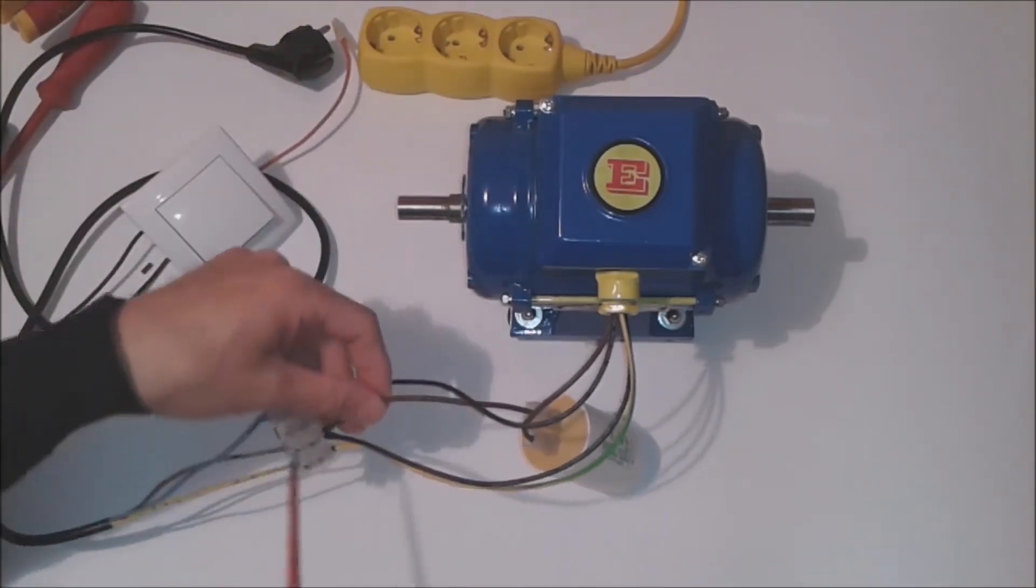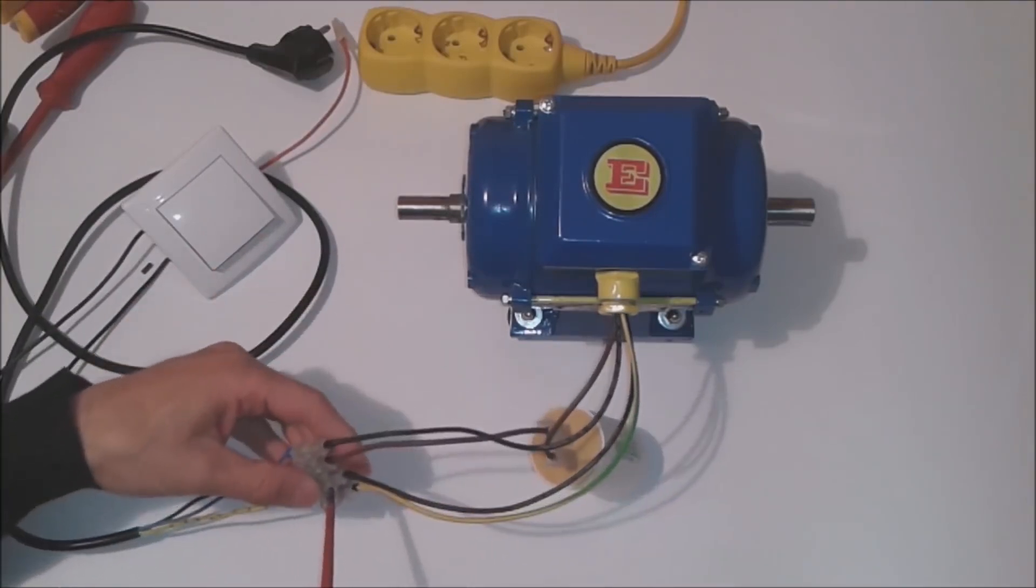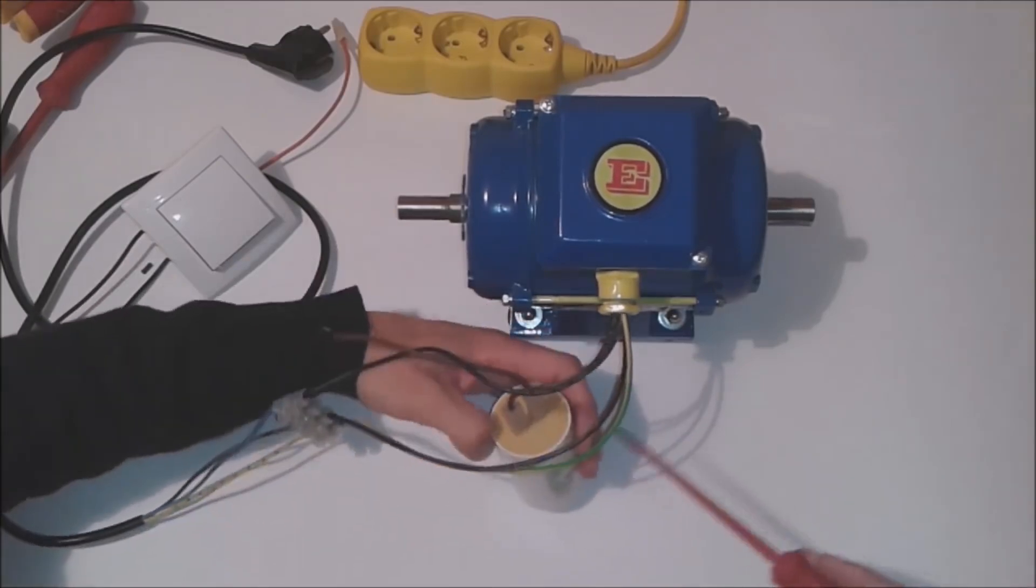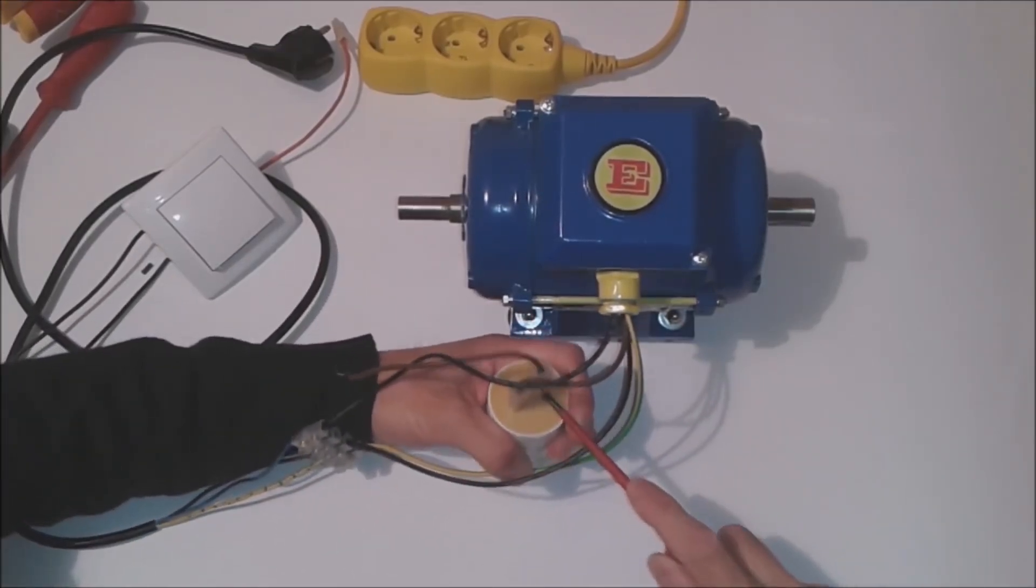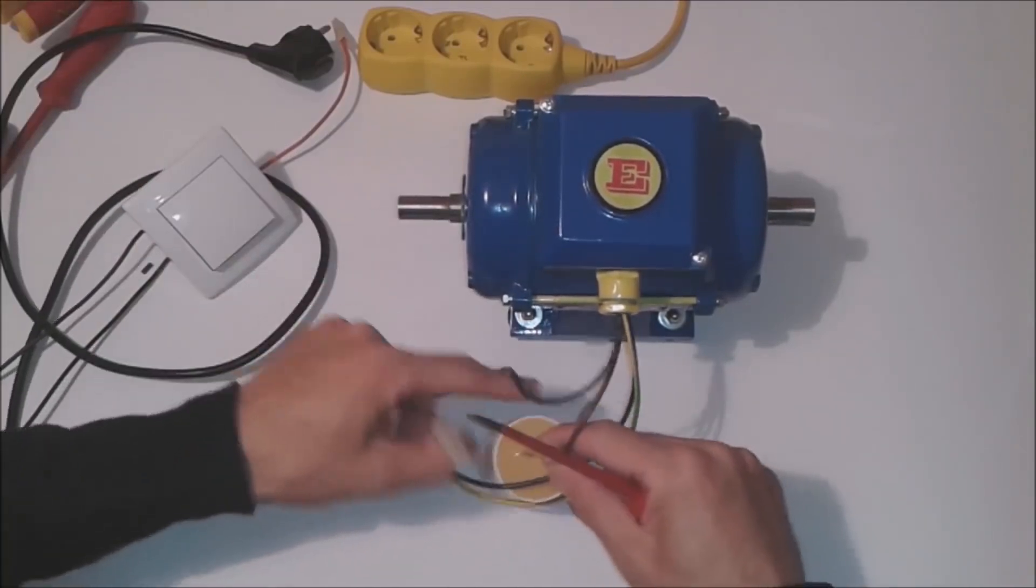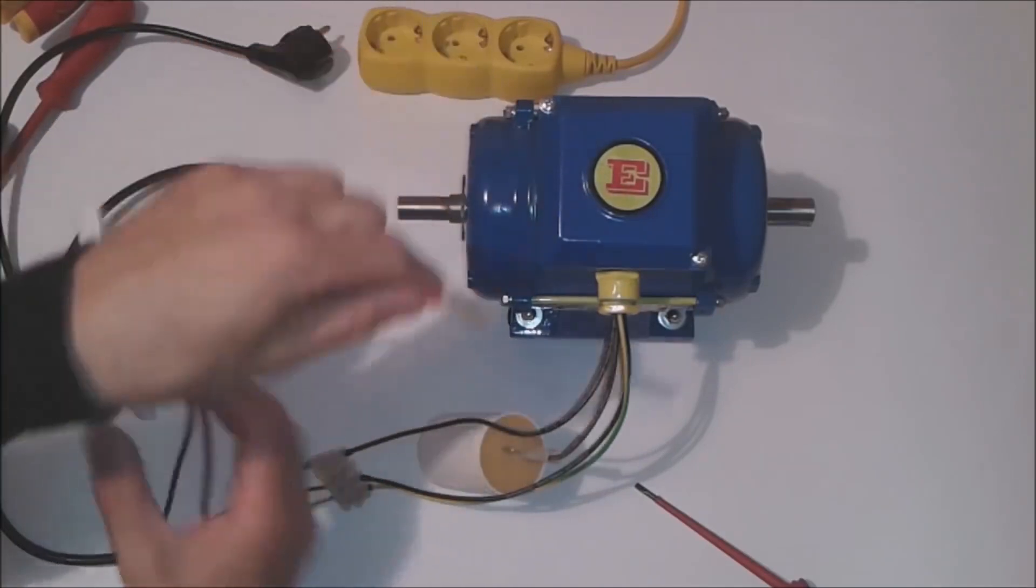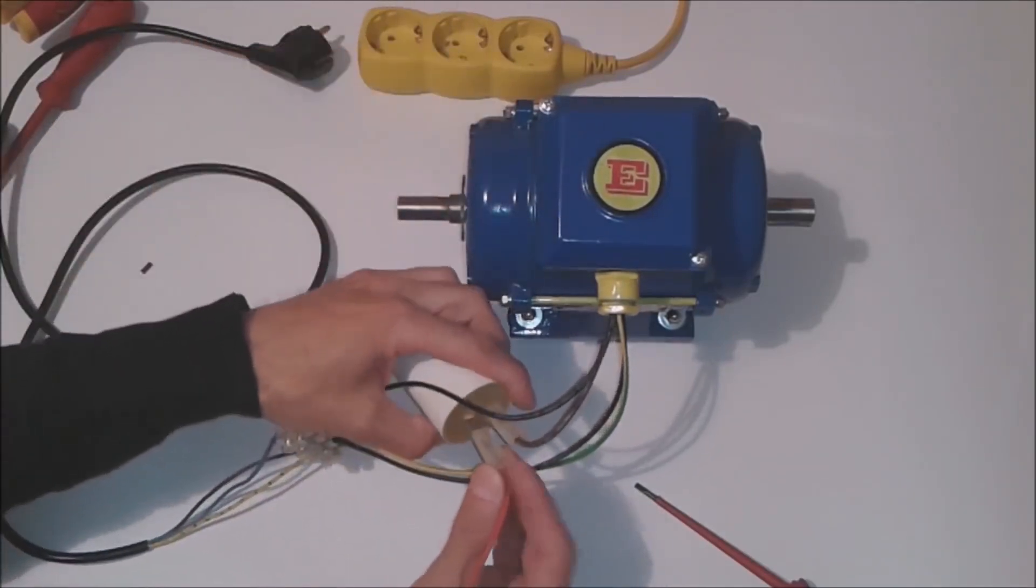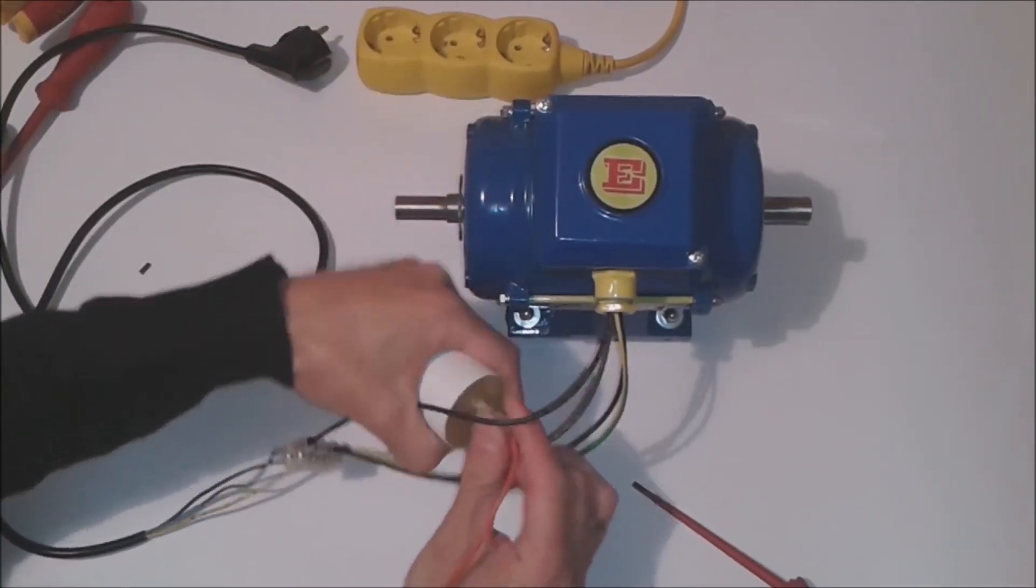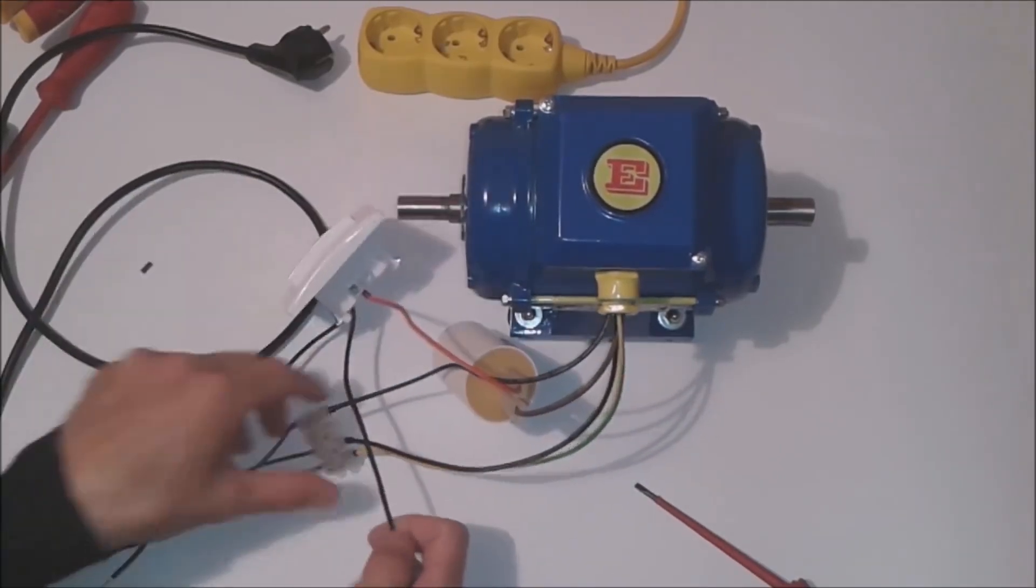Here is what we should do. We remove this conductor that leads to the connection point. The common point of the three-way switch is connected to the capacitor and these two are connected to these two points.